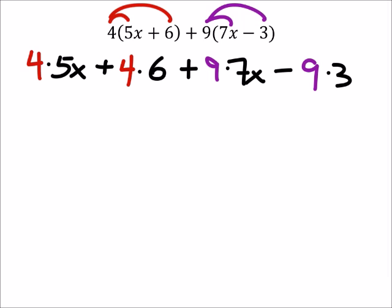So let's go ahead and evaluate these each individual term. If I have 4 5x's, then I would have 20x's. And then if I have 4 sets of 6, 4 times 6 is 24.